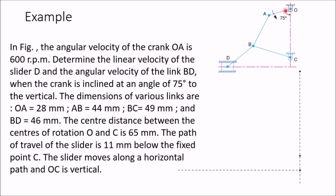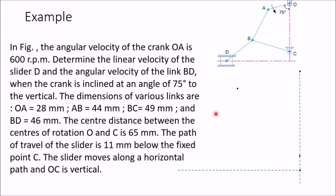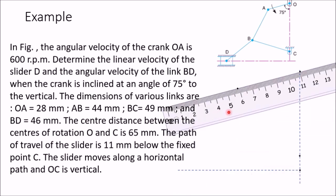Now we will start from O. Draw line OA, which is of length 28 mm at an angle of 75 degrees from the vertical. From O, at 75 degrees you can see 70 and 75 mm markings. Mark one point at an angle of 75 degrees, then remove the protractor and draw the line. The length of this line should be 28 mm, that is 2.8 cm. Mark this point — this point is your A.